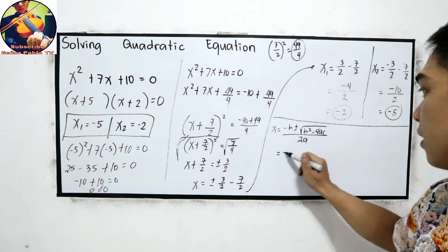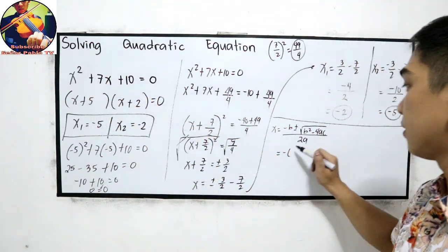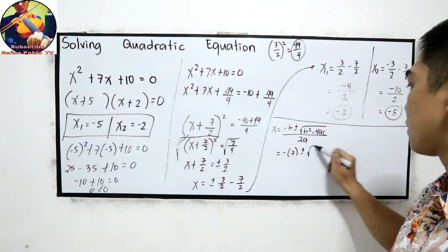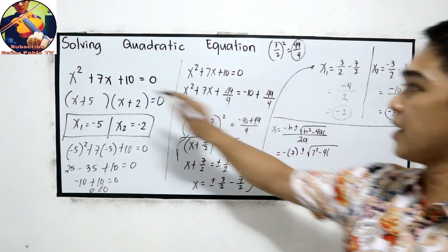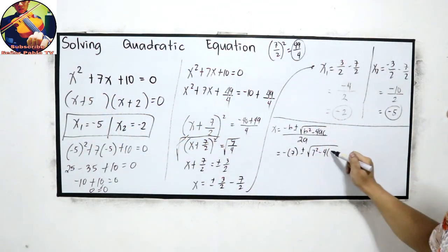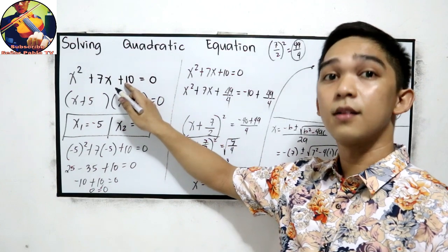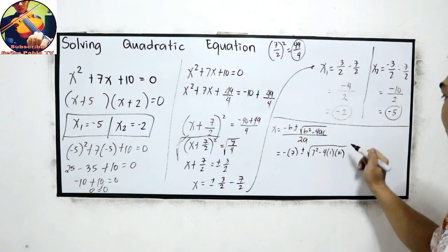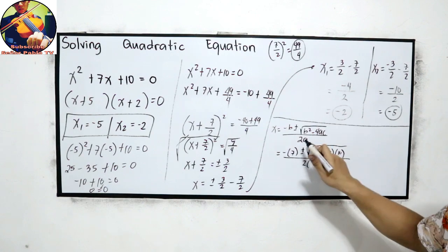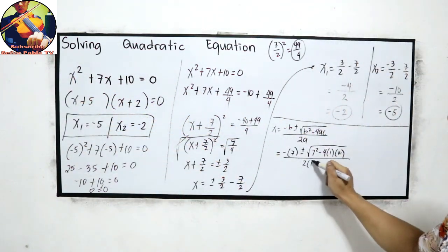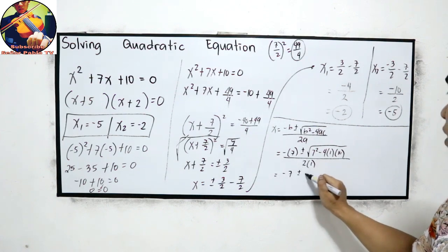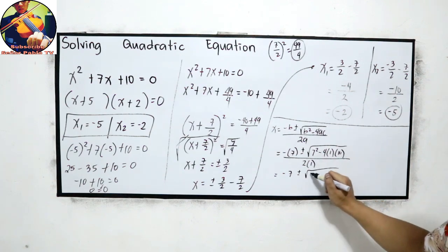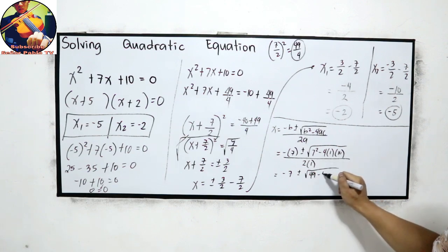So x equals negative 7, plus or minus the square root of 7 squared minus 4 times a, which is 1, times c, which is 10. That gives us the square root of 49 minus 4 times 1 times 10, which is 40, all over 2 times 1.